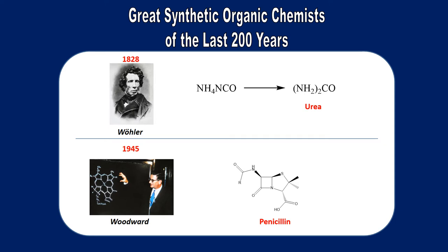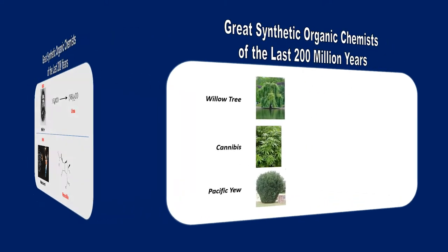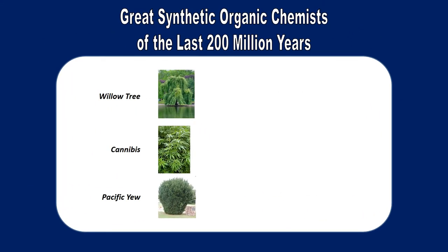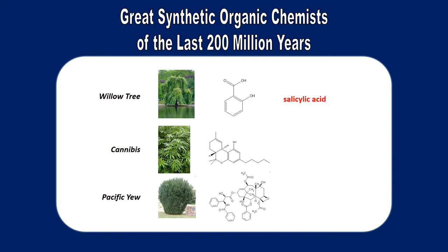And as great and influential as these experiments and inventions became, there are other chemists who've been at work for much, much longer — some of the great synthetic organic chemists of the last 200 million years. Small organic compounds don't have to be created in a laboratory; we can source them from natural products. For example, the willow tree creates salicylic acid, cannabis can be used to source tetrahydrocannabinol, and Pacific yew is the source of taxol — an analgesic, a psychotropic, and an anti-cancer drug respectively.